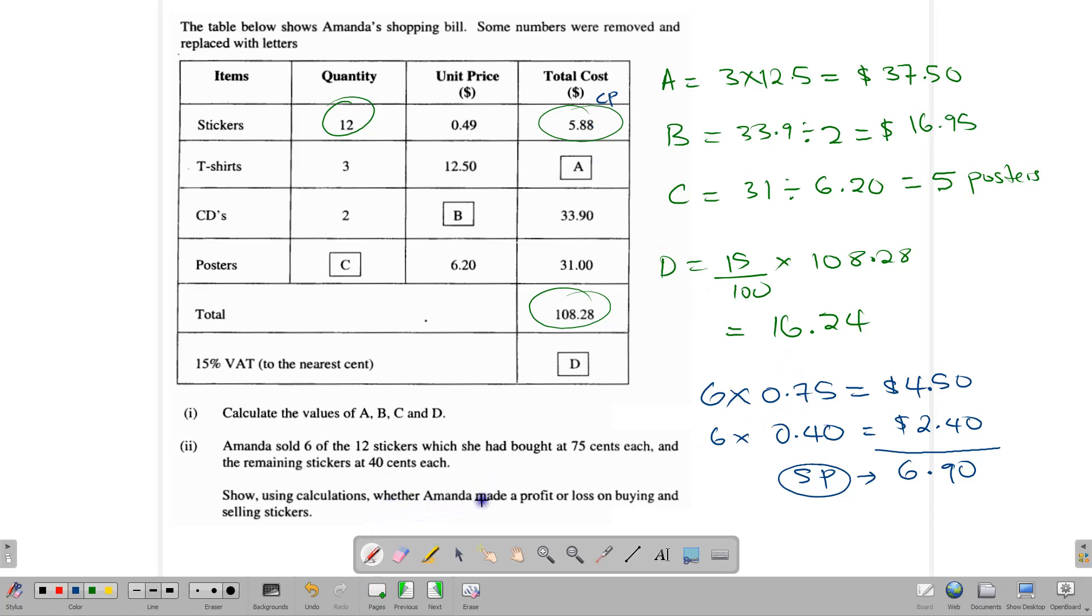The profit would be the difference between the selling price and the cost price. So we can see $6.90 minus $5.88, and that would give us $1.02.